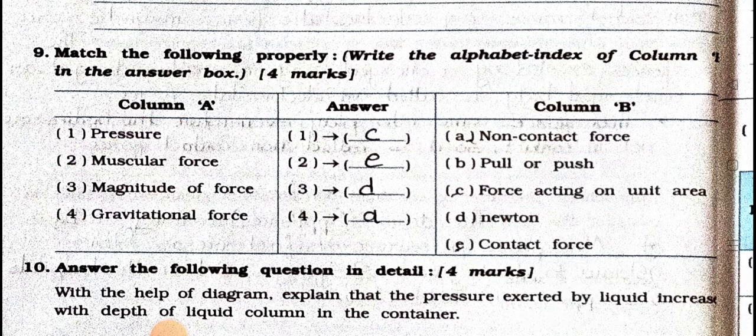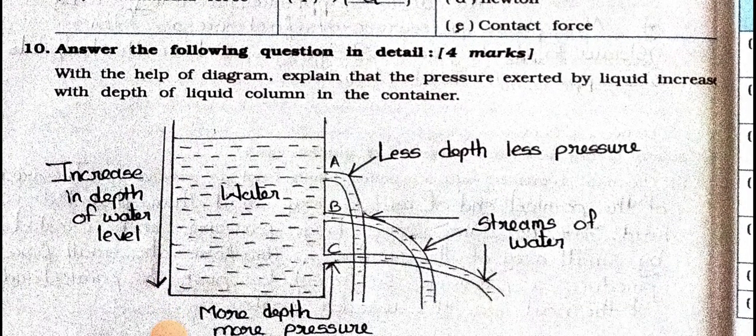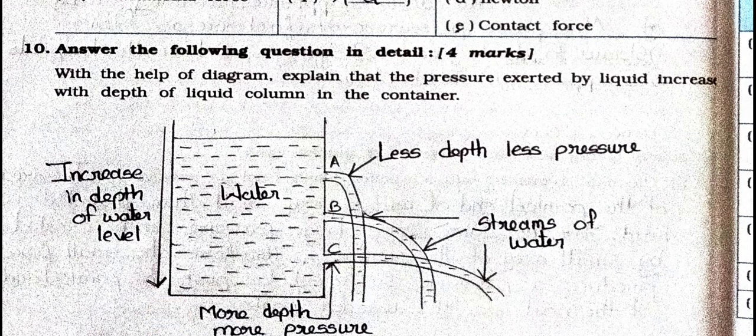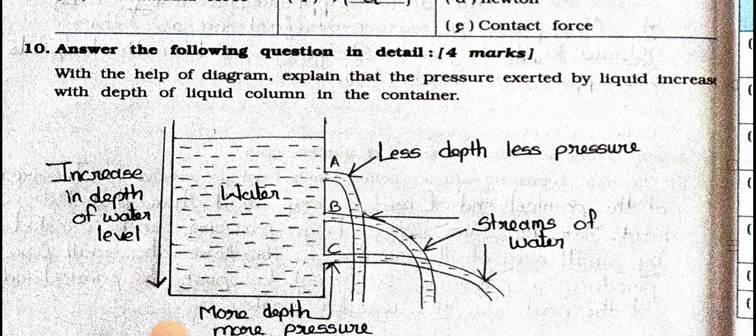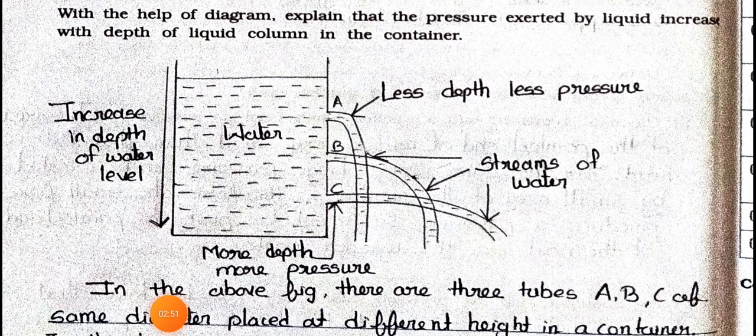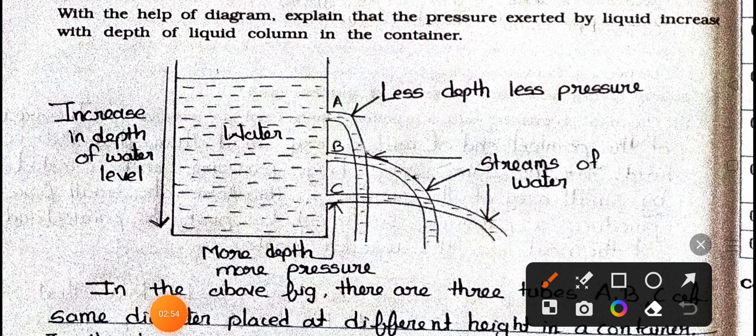Now see main 10: Answer the following question in detail. With the help of diagram, explain that the pressure exerted by liquid increases with depth of the liquid column in the container. First we will see the figure. Here a water tank is given, and here streams of water are given: this one A which falls very near.